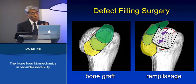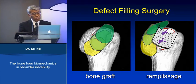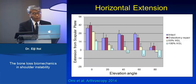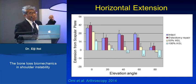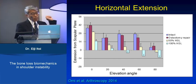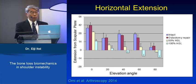This distortion should result in limited range of motion. We measured range of motion using cadavers and found a significant decrease in horizontal extension as well as external rotation after remplissage. So if the patient is a throwing athlete, we cannot recommend this procedure.